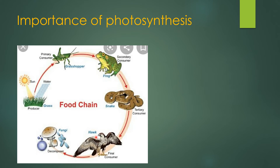They are directly or indirectly dependent upon the producer. The grasshopper directly consumes the plant parts, so it is known as the primary consumer — organisms that directly depend upon the green plants. The frog consumes the grasshopper, so it is known as the secondary consumer. The snake is the tertiary consumer as it consumes the secondary one. And finally, the hawk is the final consumer as it consumes the tertiary one.